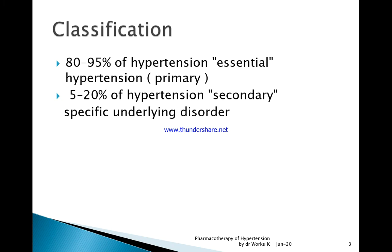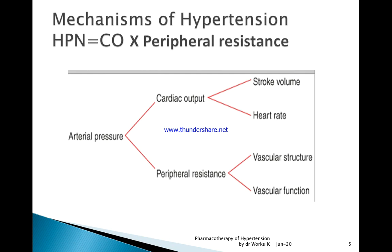Secondary hypertension constitutes about 5 to 20% of cases, so the common one is essential hypertension. If it is secondary, management is designed around treating the underlying cause. Blood pressure is the product of cardiac output times peripheral resistance, so any drug affecting cardiac output or peripheral resistance will have an effect on hypertension.